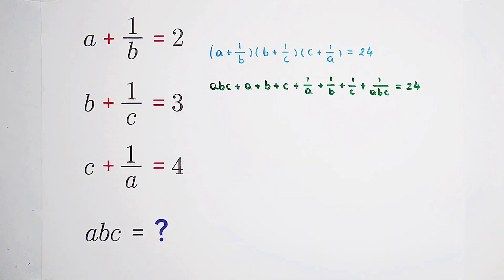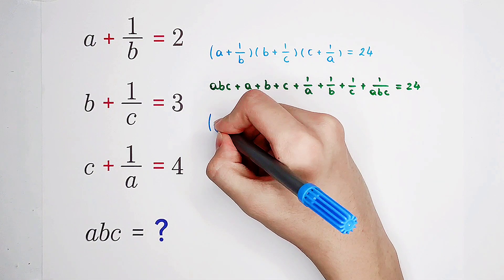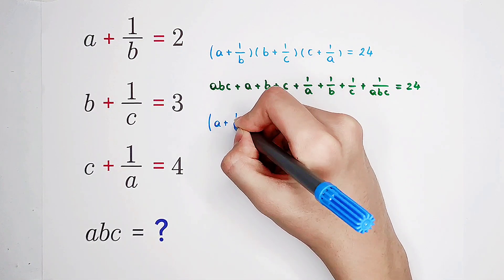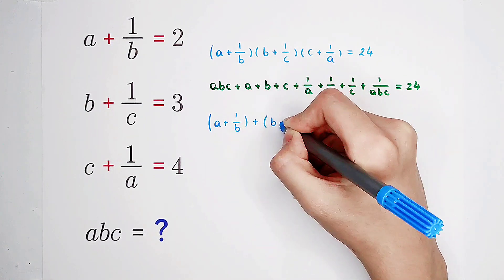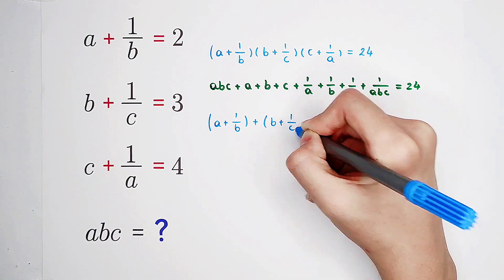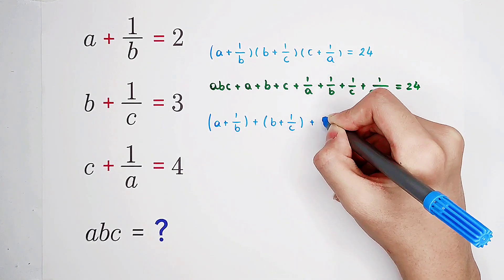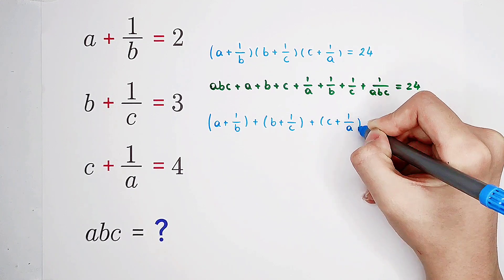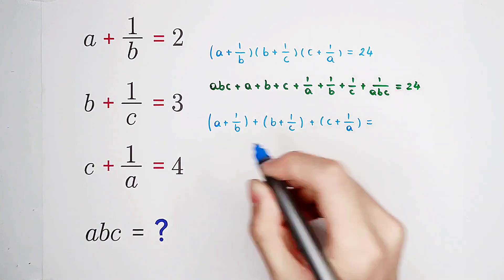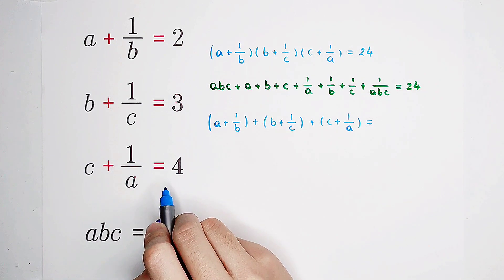Now, I'd like to sum these three equations. And you can get a plus one over b plus b plus one over c plus c plus one over a is two plus three plus four.